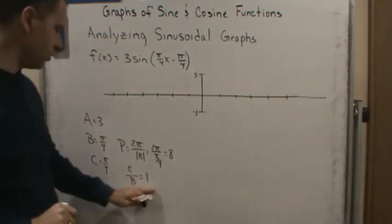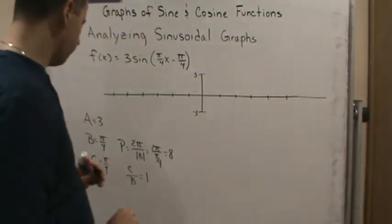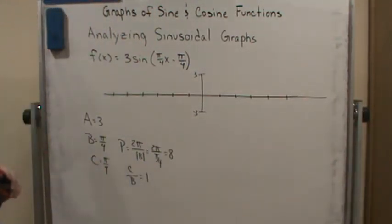But the phase shift is 1, so it's going to be over 1. And so 1 unit to the right. And the period is 8.